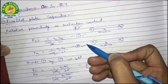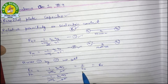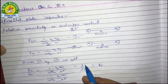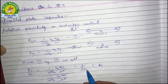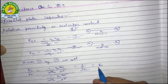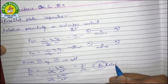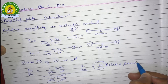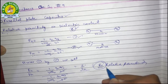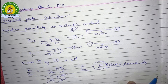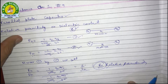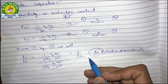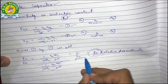Dividing equation 1 by equation 2, we get epsilon divided by epsilon naught — the ratio of electrostatic permittivity in the medium to that in the vacuum. This ratio is called relative permittivity. The answer is epsilon divided by epsilon naught.